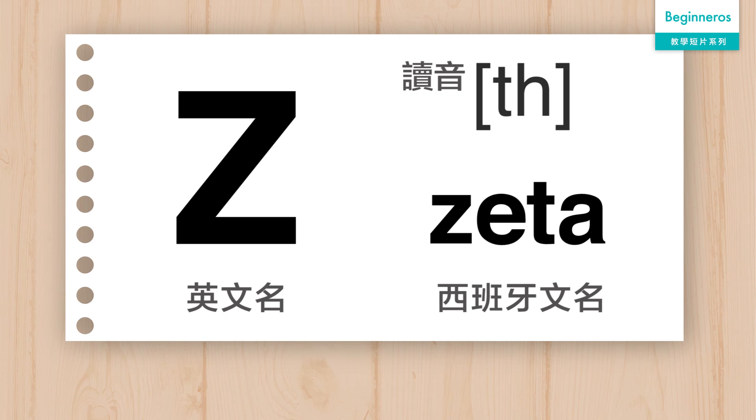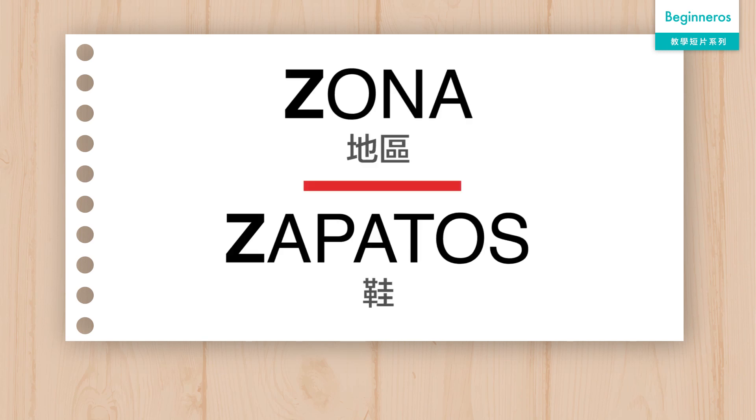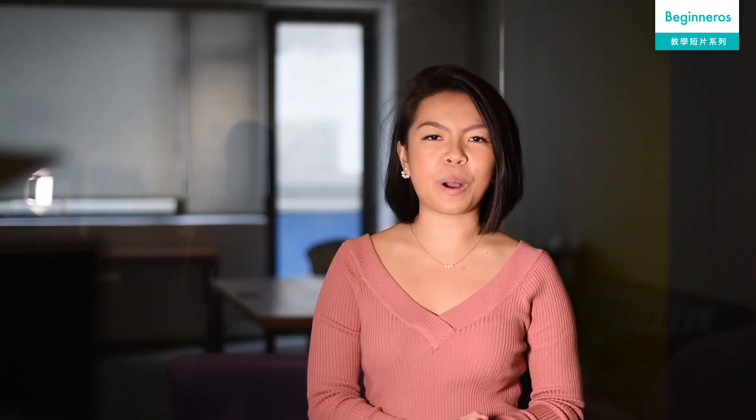還有 Z，它的西班牙語名叫 Zeta。它的發音跟英文的 S 音是一樣的，例如 Zona。我們終於完成了西班牙語的28個字母和它們的發音！你還未記得它們？這是正常的，那我們現在就重溫一下之前的片段，Bye Bye！